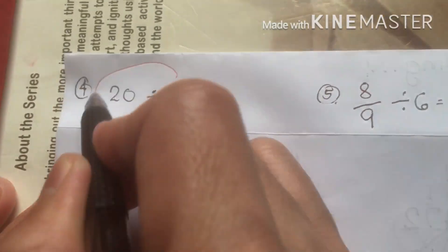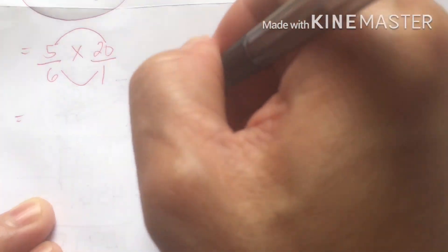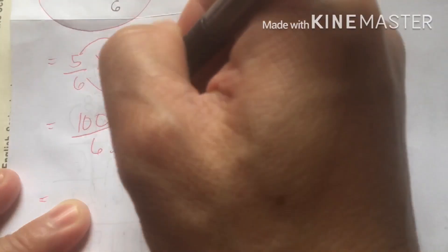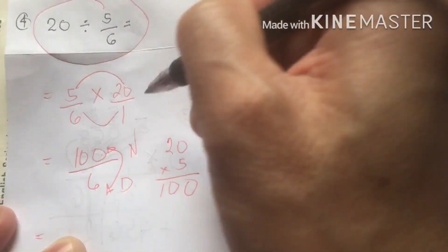For number four, we have 20 divided by five-sixths. We write five-sixths times 20-over-one, then reverse to get six-over-five times 20-over-one. Multiplying: 20 times five is 100, over six. Now we divide 100 by six. Ten divided by six is one with remainder four; bring down zero to get 40. Forty divided by six gives approximately six remainder four, making it 16-point-something.